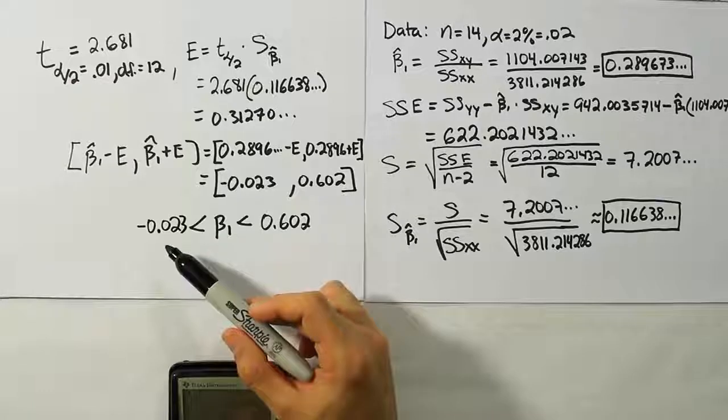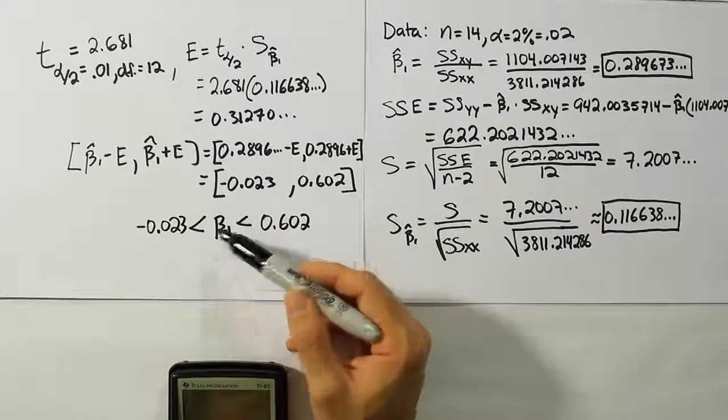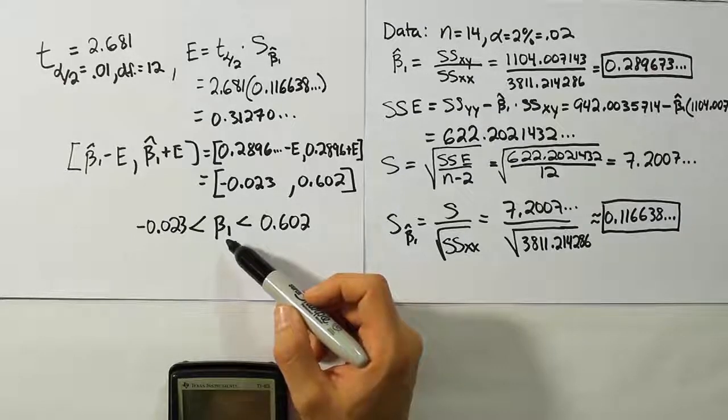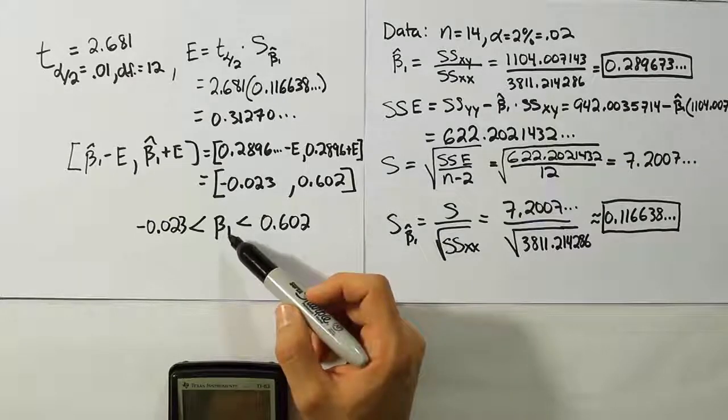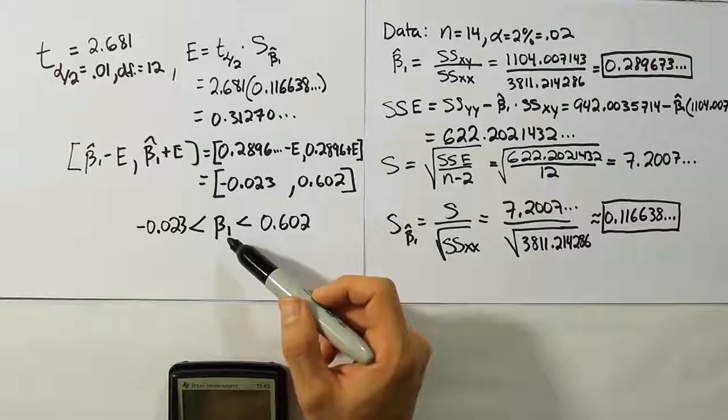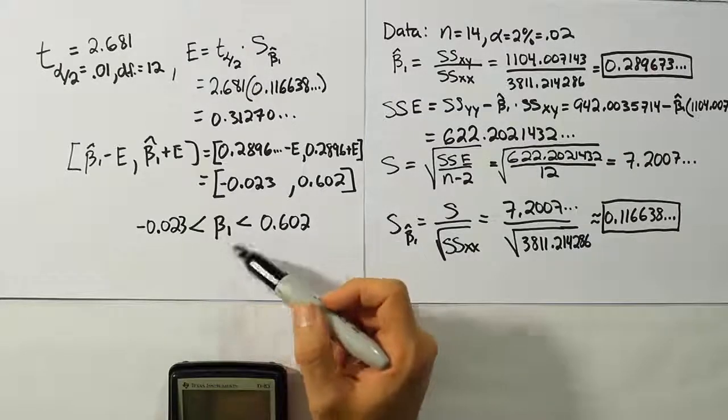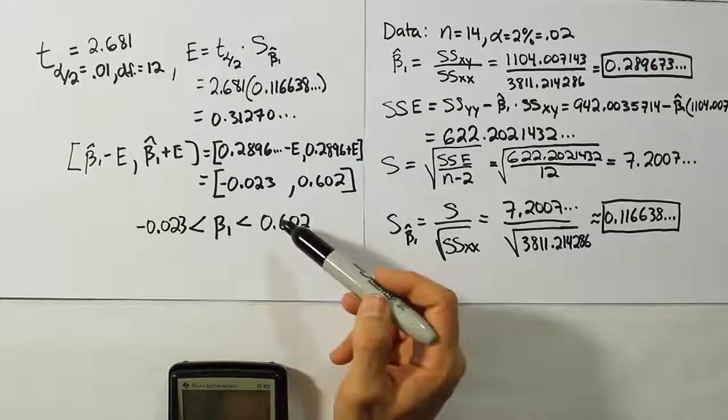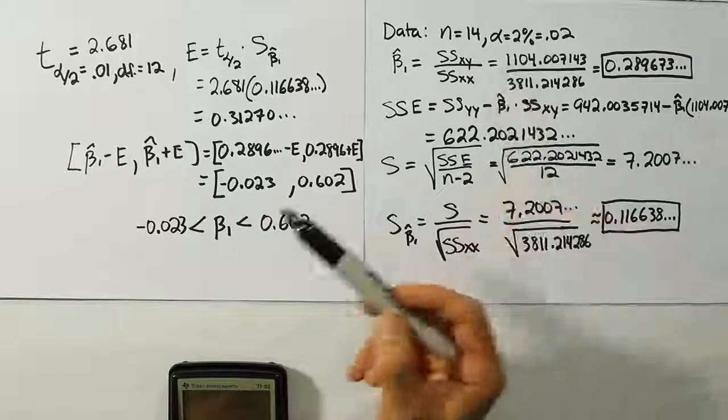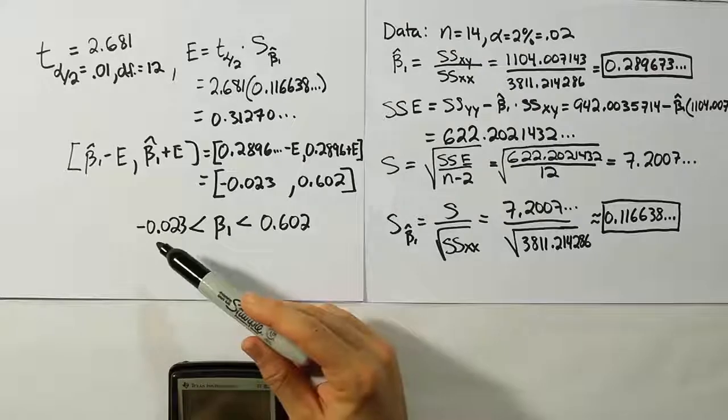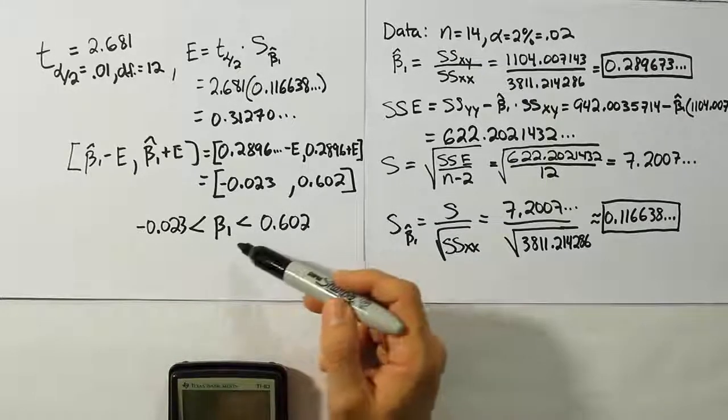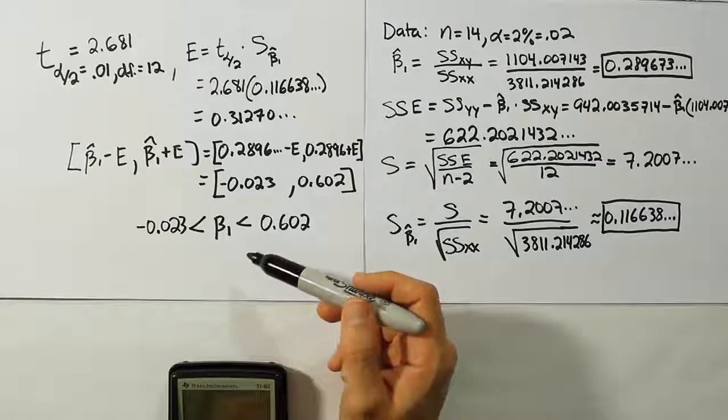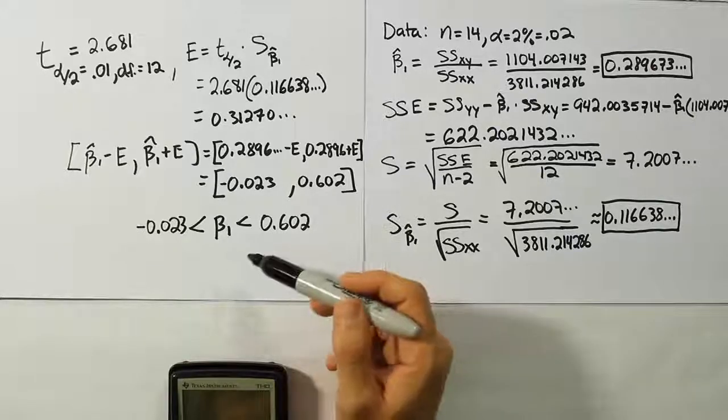What this shows is that the interval goes from negative to positive. Remember, that means that 0 is inside the interval. And if 0 is inside the interval, it's quite possible that the population parameter beta1, or in other words, the population slope, is equal to 0. It's one of the possible candidates. So if it is equal to 0, that would imply that there's no linear relationship between the two variables x and y. So based on the fact that this interval includes 0, since it goes from negative to positive, what we can say here is that we're 98% confident that the beta1 value is somewhere between negative 0.023 and 0.602. And since 0 is included in that interval, we cannot conclude that there is a linear relationship between x and y.